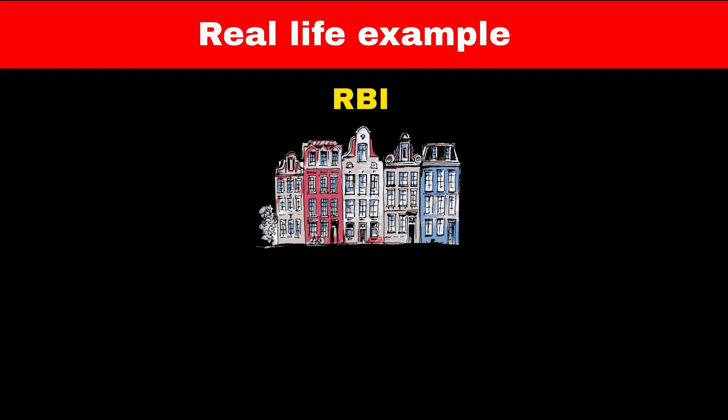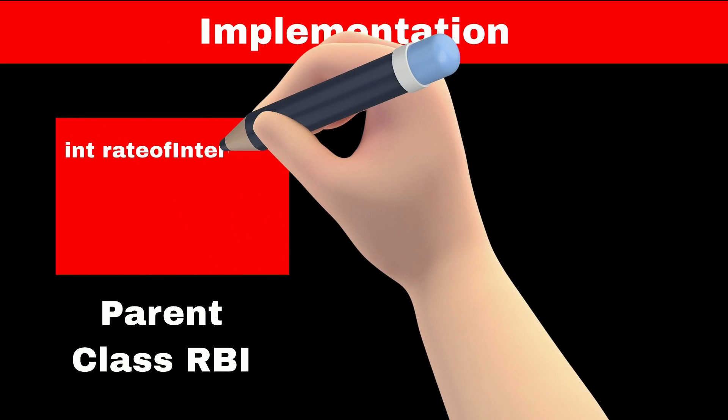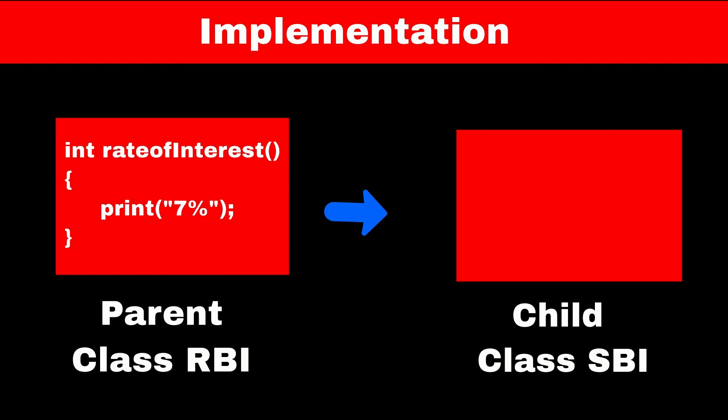Consider the example of a banking system. RBI and the government have defined some rules for banking, like every bank should give interest to all users on their money. All other banks like SBI and HDFC have freedom to define how much interest rate they want to give. To implement this banking system, we will create a parent class called RBI which will define a rate of interest method that prints 7% as the interest rate - which is the generic guideline that RBI gives.